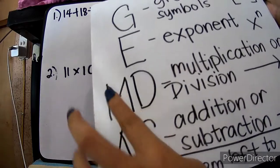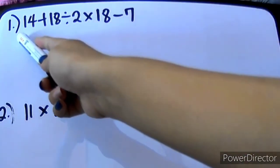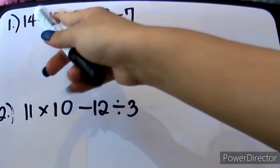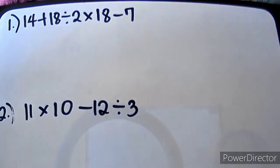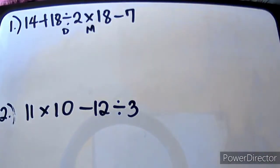Hindi pwedeng AS agad — dapat magawa muna natin yung M or D, as they appear from left to right. So, you will check from left to right anong operation yung mauuna. Hindi natin pwedeng i-add agad si 14 and 18 dahil ito ang ating division, ito ang ating multiplication. Hindi naman sinabing dahil M yung nauna sa GEMDAS rule, M una yung gagawin. Again, as they appear from left to right.